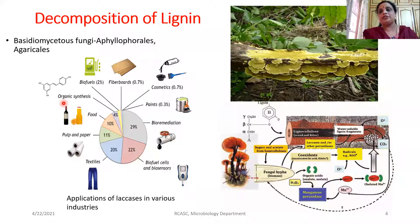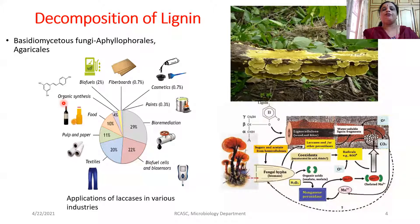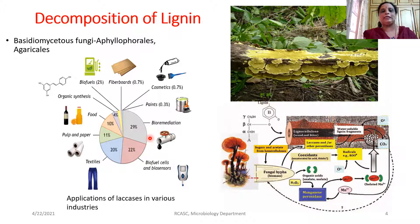If we talk about the decomposition of this particular lignin, most organisms — starting from bacteria, actinomycetes, or fungi — may not have the ability of producing the enzyme to decompose this particular lignin. But there are certain Basidiomycetes fungi and Ascomycetes fungi, especially the Agaricales and Aphyllophorales, all these mushrooms — they have an ability of producing an enzyme laccase, which plays a major role of breaking down this complex lignin into simpler form.